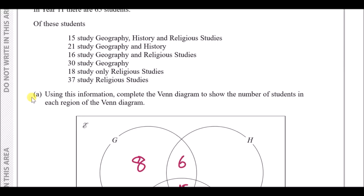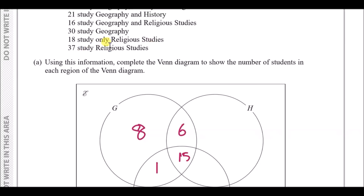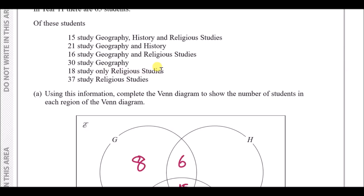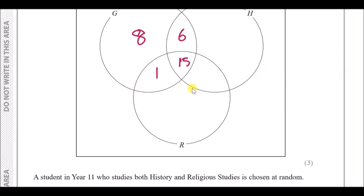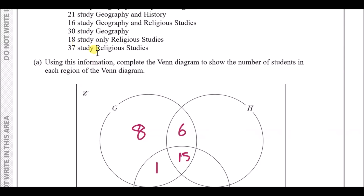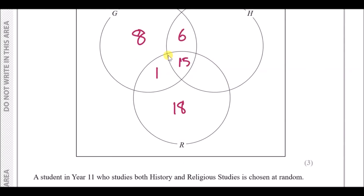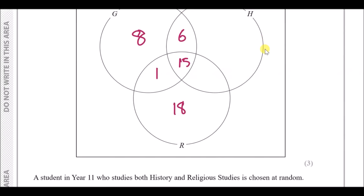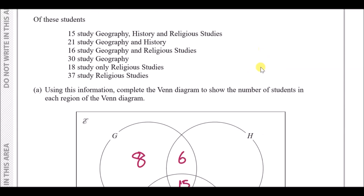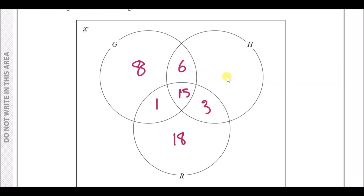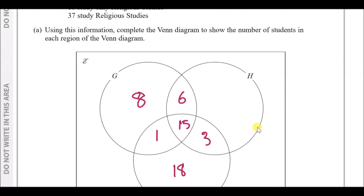18 studied only religious studies — 'only' means just that small segment, not including geography or history. 37 studied religious studies overall, so the whole R circle adds up to 37. Adding 18 + 15 + 1 = 34, leaving a remainder of 3 in the history-and-religious-studies-only intersection.